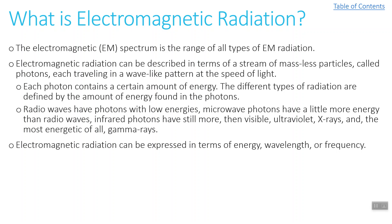Radio waves have photons with very low energies. Microwave photons have a little more energy than radio waves. Infrared photons are still more. Then we get into visible light, which our eyes happen to be able to detect. Then we get into ultraviolet, X-rays, and the most energetic of all is gamma rays. Electromagnetic radiation can be expressed in terms of energy, wavelength, and frequency. Based on the energy of a photon, it's assigned to a different region of the electromagnetic spectrum.